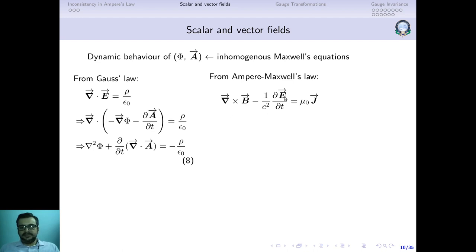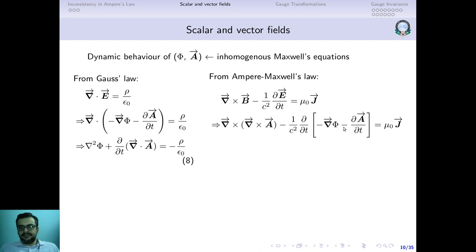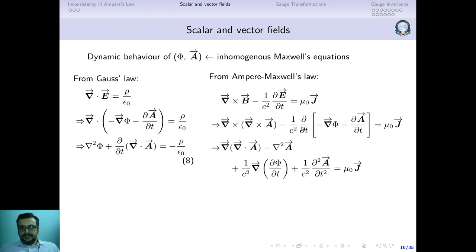The second inhomogeneous Maxwell's equation is curl of B minus (1/c²)∂E/∂t equals μ₀J. We substitute B = curl of A and E = −∇φ − ∂A/∂t. Using the vector identity curl of curl of A equals ∇(∇·A) − ∇²A, and swapping time and space derivatives as needed, we collect terms: the Laplacian and second-order time derivative group together, and the first-order derivative terms involving divergence of A and ∂φ/∂t group with a gradient. This gives equation number 9.